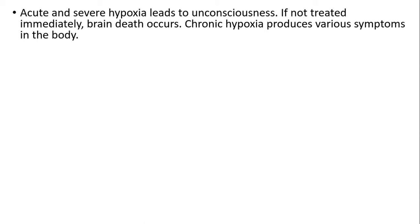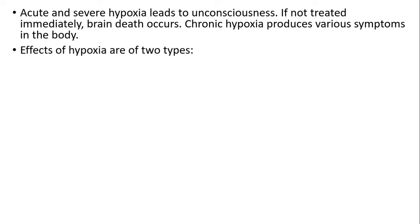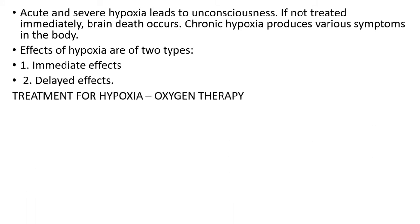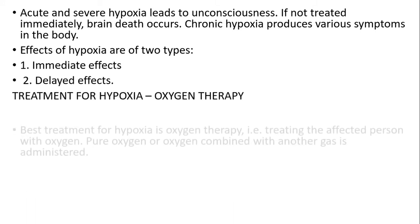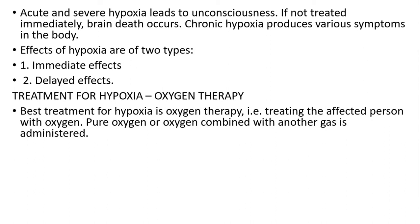Acute and severe hypoxia lead to unconsciousness. If not treated immediately, brain death occurs. Chronic hypoxia produces various symptoms in the body. Effects of hypoxia are of two types: immediate effect and delayed effect. The treatment of hypoxia is oxygen therapy — treating the affected person with pure oxygen or oxygen combined with other gases.